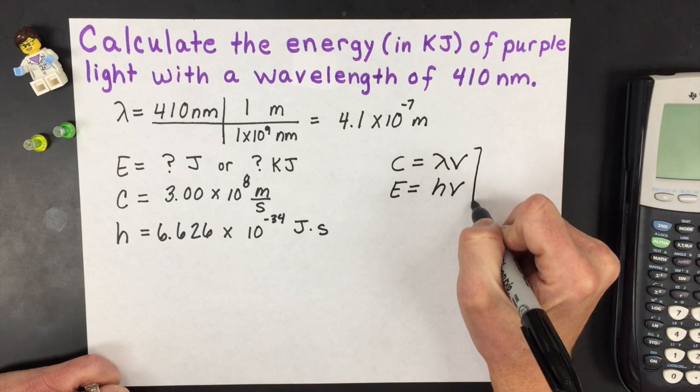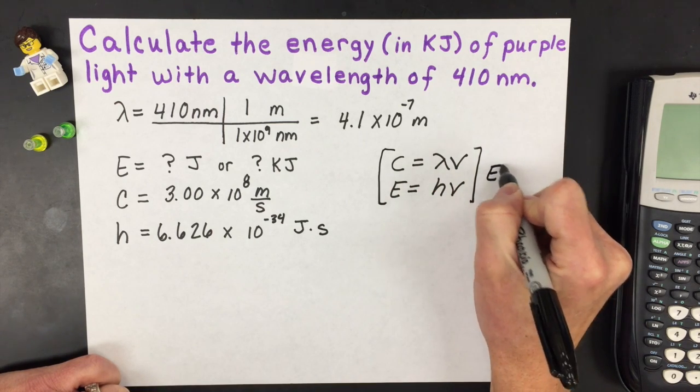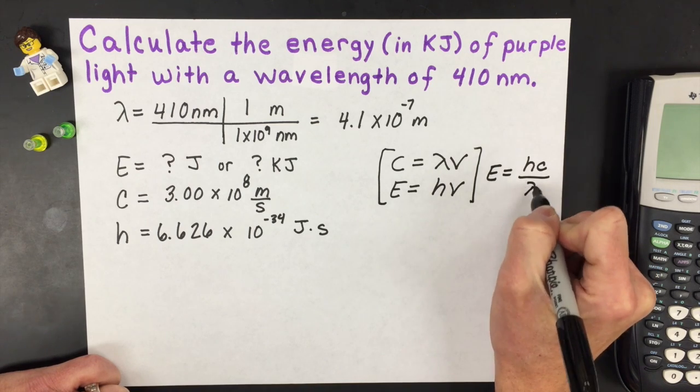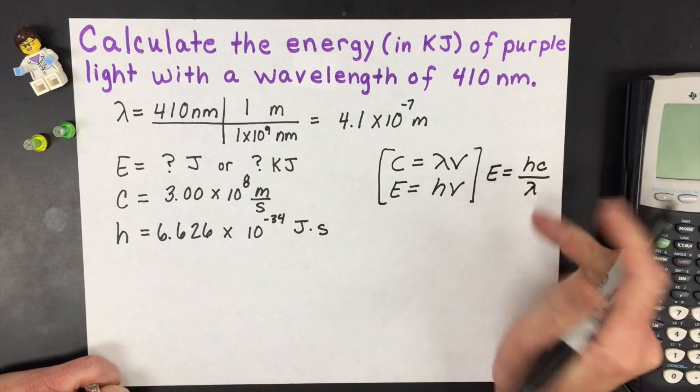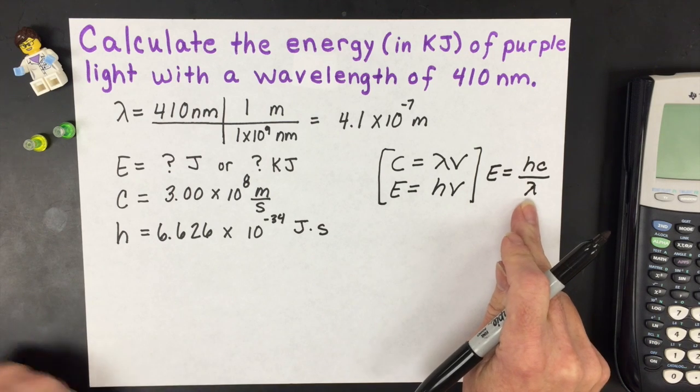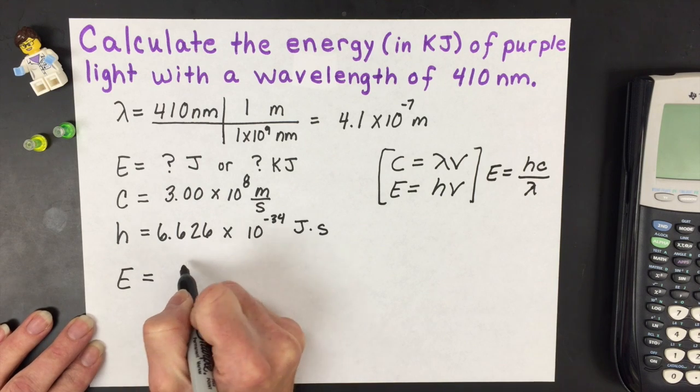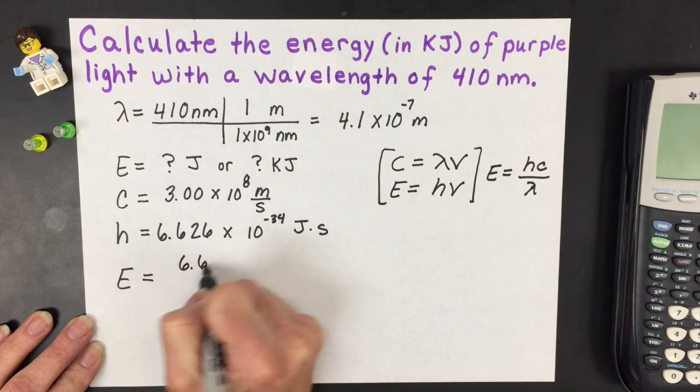If you take these two and algebraically isolate it correctly, you will get a third equation, which is the one that we need, which is energy equals Planck's constant times speed of light over the wavelength. So that's the equation I'm going to use, and I don't have to isolate for any variables. I can start putting in my numbers.